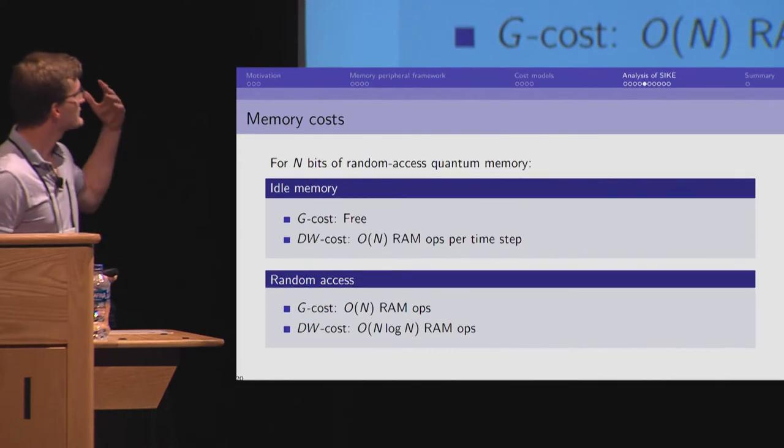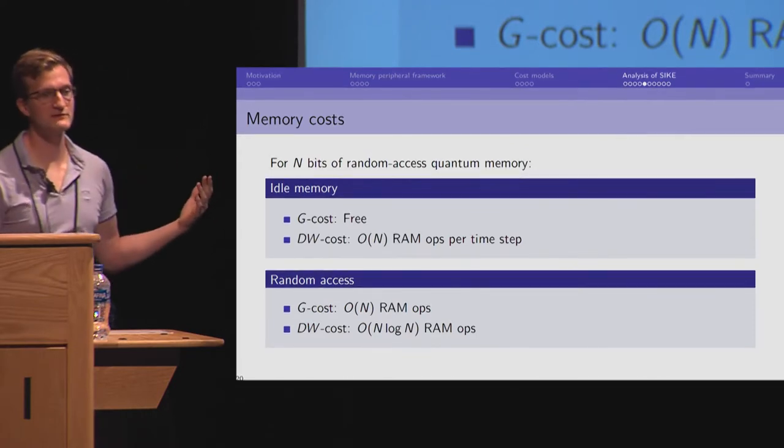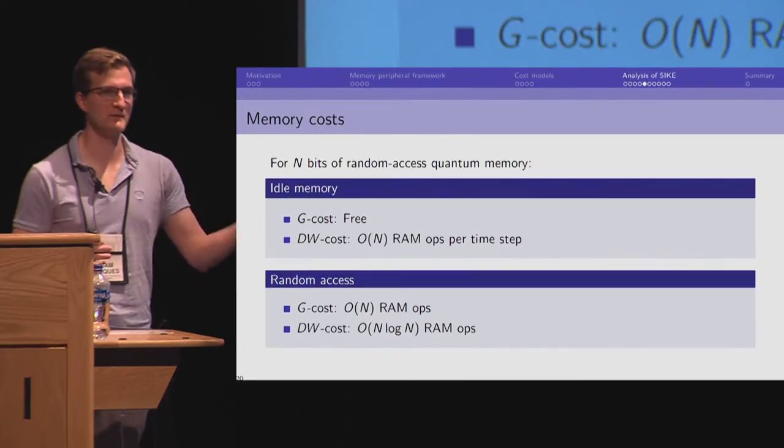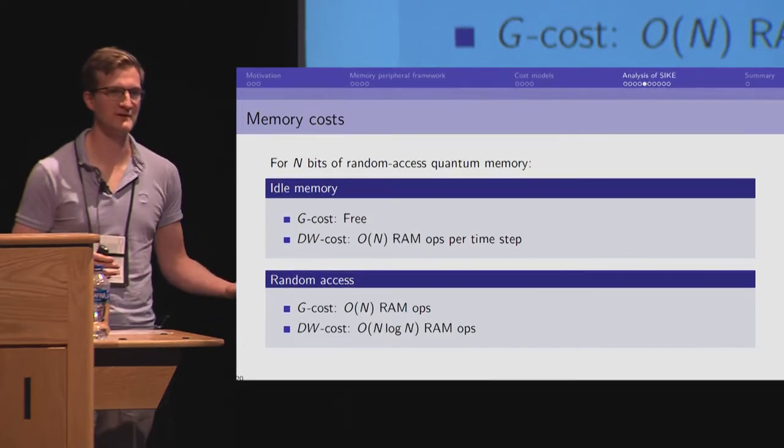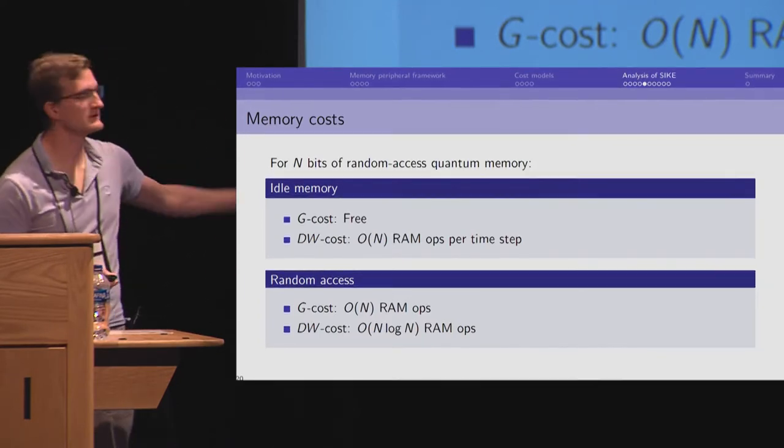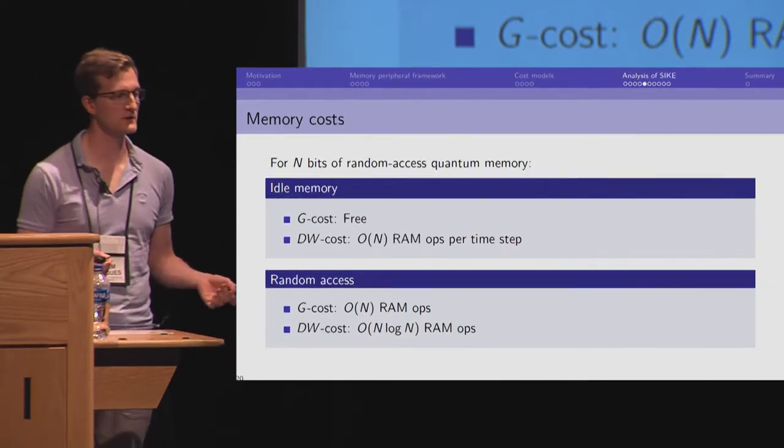And so, this can give us a cost for memory in terms of gates. If the memory is idle, if we're not actually accessing it, of course, if it's passively corrected, it's free. And it wouldn't be free if it's actively corrected. And for random access, we pay at least a linear cost in both of these cost models.